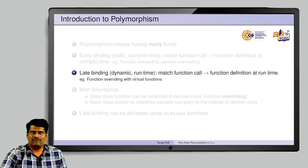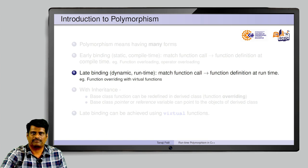The second form of polymorphism is late binding, which is also called runtime polymorphism. Here we match the function call with its function definition at runtime, and for this C++ provides the facility of function overriding with virtual functions.